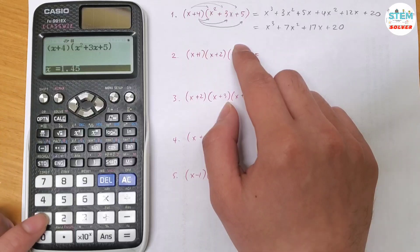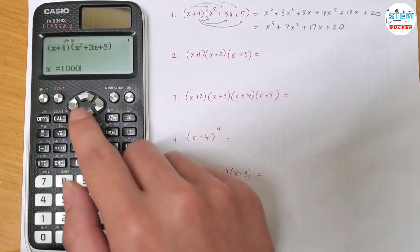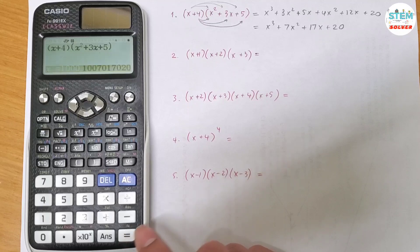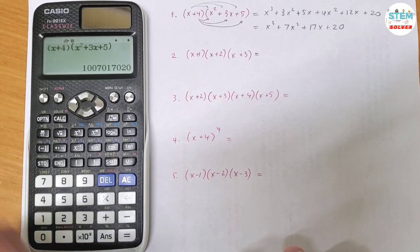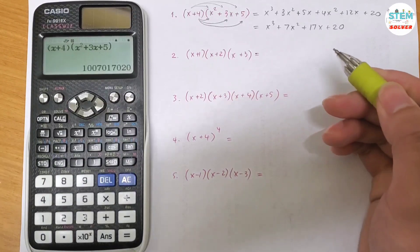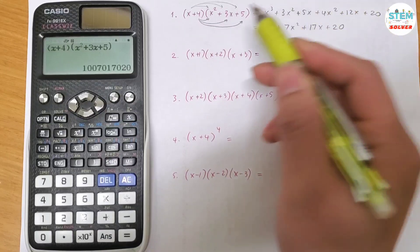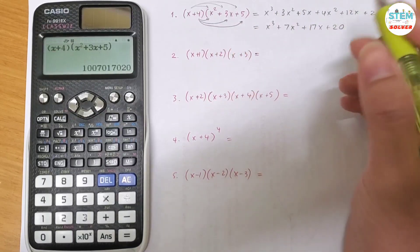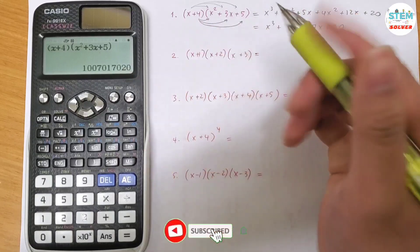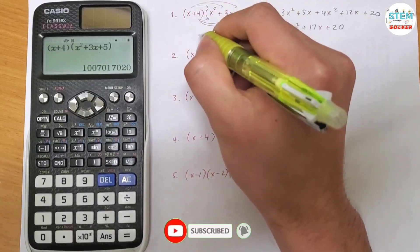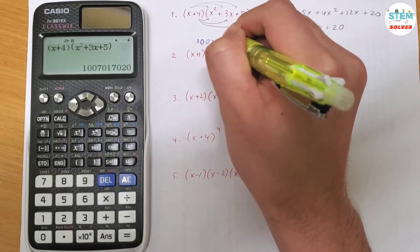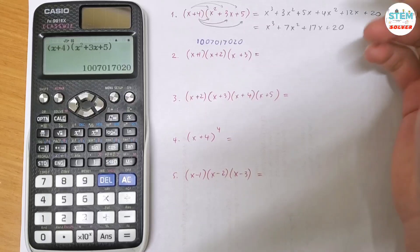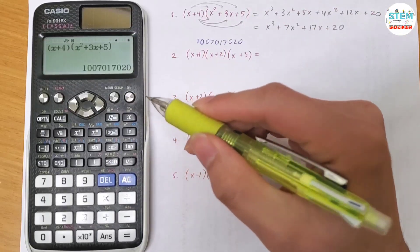All right, then what do you do next? You hit the solve button, then give x a value of 1,000, and hit the equals sign twice. You see that it gives you a number — this could be a million, or a couple hundred million, whatever number that is depending on your factors. Now let's figure out what this number means: 1,007,017,020.